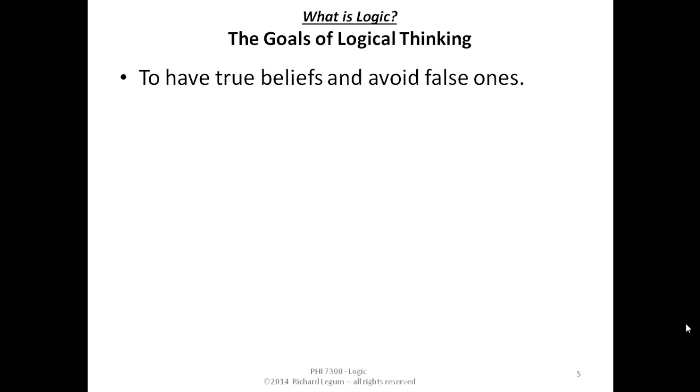To have true beliefs is easy. If we believe everything we can think about, we're going to have true beliefs. But it's the second condition: we also want to avoid false ones. So we only want to add new true beliefs. That's the goal that informal logic or logical thinking is getting us.